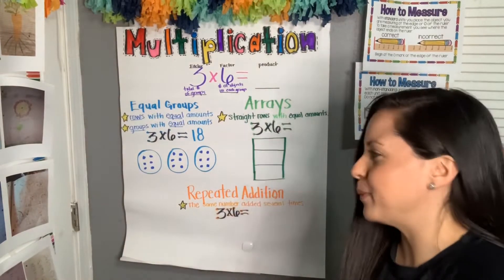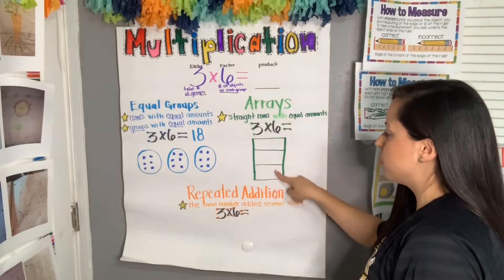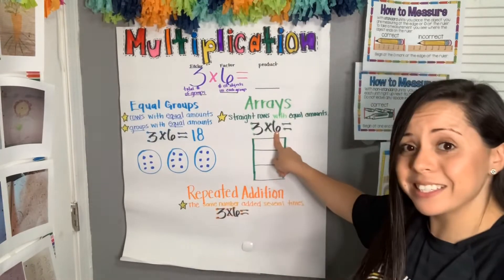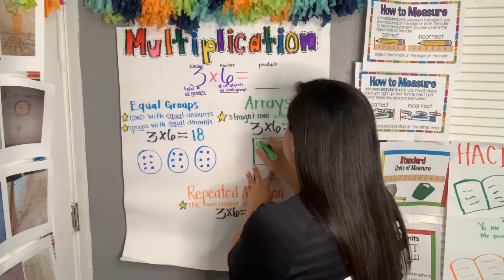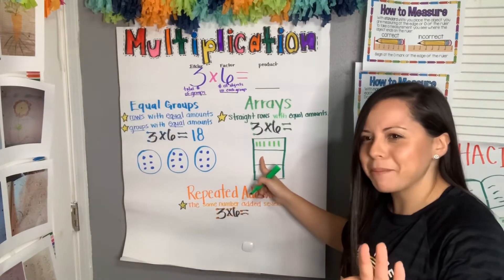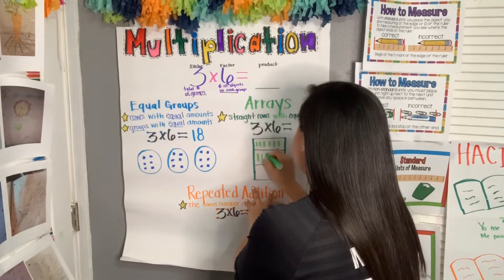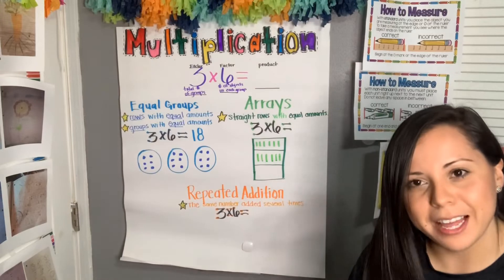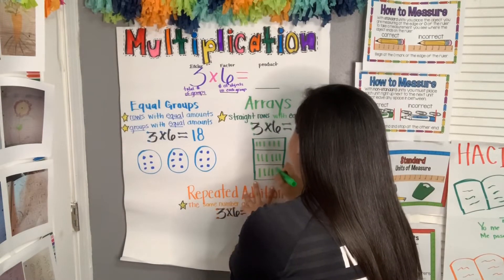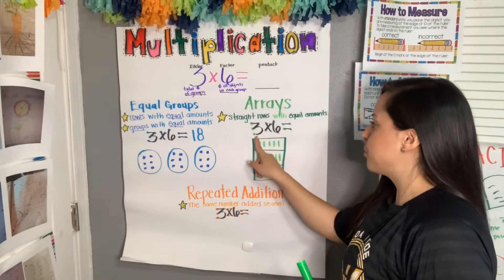I have three rows: one row, two rows, three rows. Now the second factor tells me how many will be in each row, which is six. So I draw one, two, three, four, five, six in the first row. Six in the second row, and one, two, three, four, five, six in the last row.